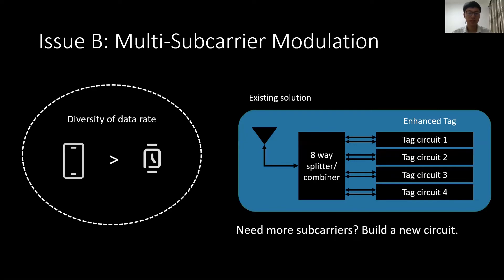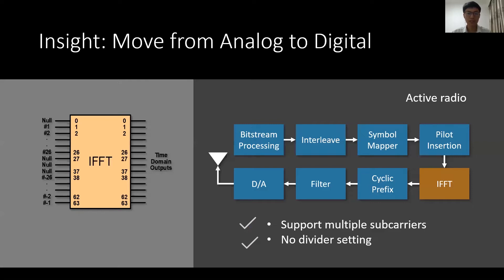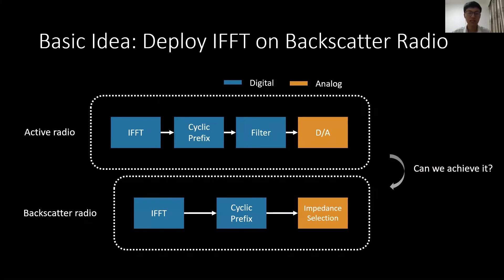Another issue with the existing design is the multi-subcarrier modulation problem. In an IoT network, some devices need a higher data rate than others. In an OFDMA system, that means they need more data subcarriers, but modifying the hardware to support more subcarriers is really expensive. The insight here is that we cannot find a good solution in the analog domain, so we turn to the digital domain. In active radio, we can naturally generate multiple subcarriers without any divider settings using the IFFT module. So the basic idea is to deploy IFFT on backscatter radio to address all these problems.